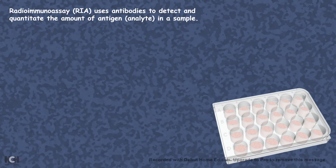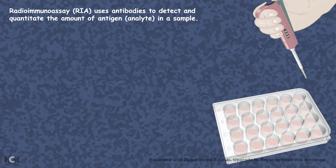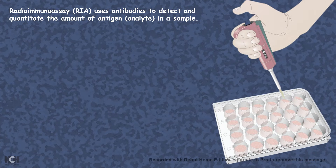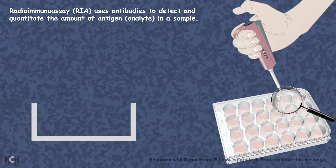Here is a multiwell plate where you would add your sample that needs to be analyzed and where you want to know about its concentration. Let's look at one well to understand the principle in more detail. Let's say you want to detect antigen A and you ask the question: is this antigen A present in the patient sample or not?